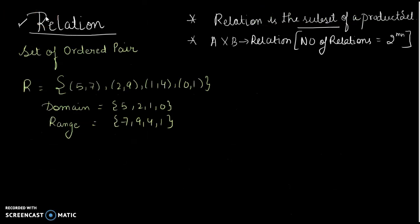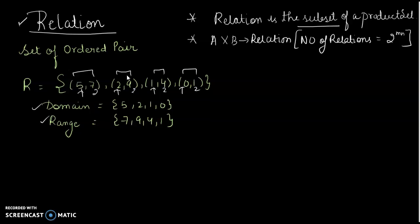Now, what is a relation? A set of ordered pairs is known as a relation. The domain is the first element of every ordered pair, and the range is the second element of the ordered pair. A relation is a subset of a product set — A×B is a relation.